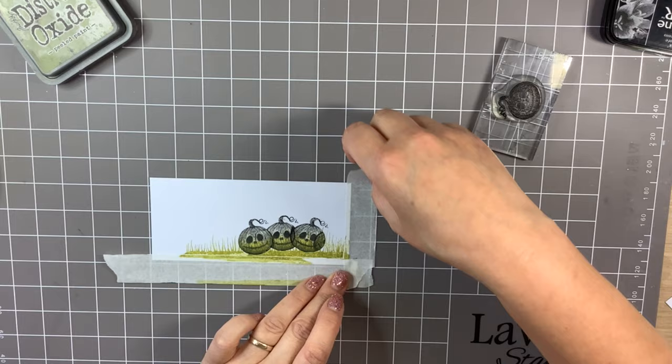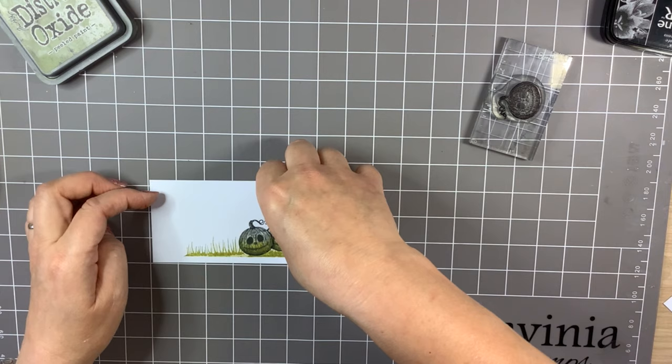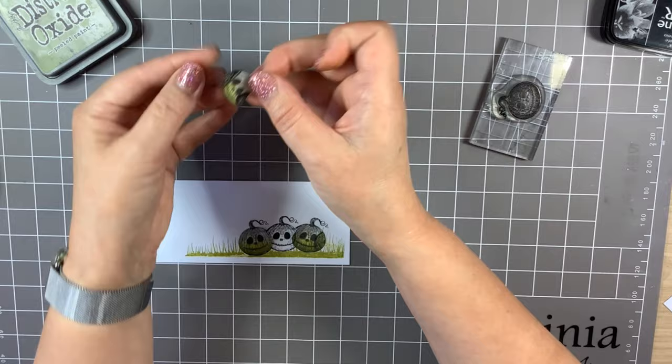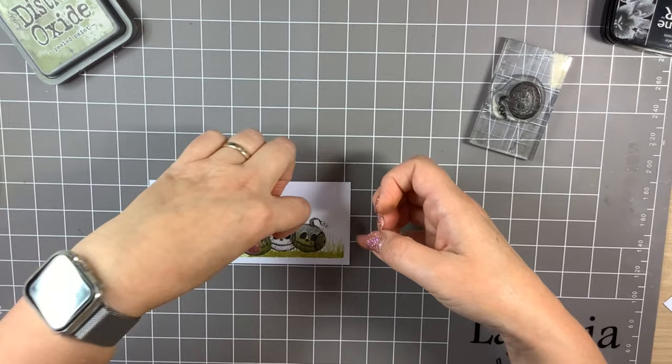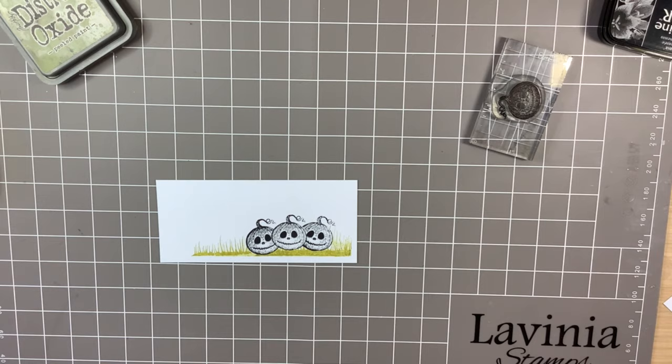Now I'm going to lift up the tape and remove the little masks. I've got the little backing sheets here to put them back on to, so I'm ready for next time. As you can see it looks a nice little friendly trio there.